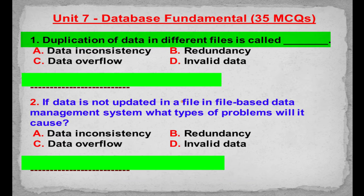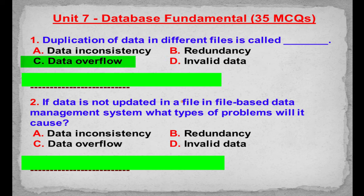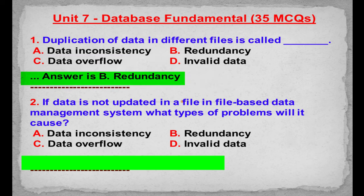MCQ number 1: Duplication of data in different files is called. Option A: Data inconsistency. Option B: Redundancy. Option C: Data overflow. Option D: Invalid data. Correct answer is Option B: Redundancy.